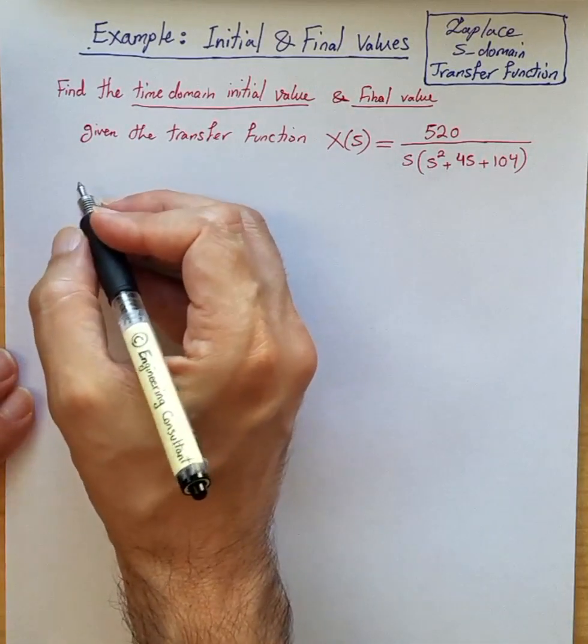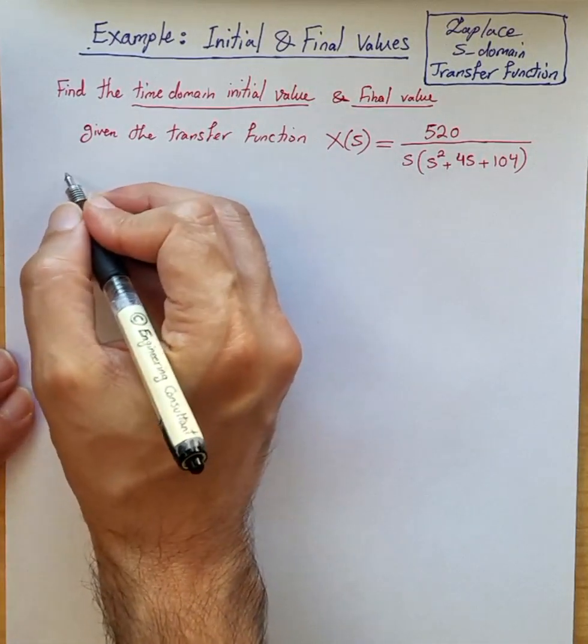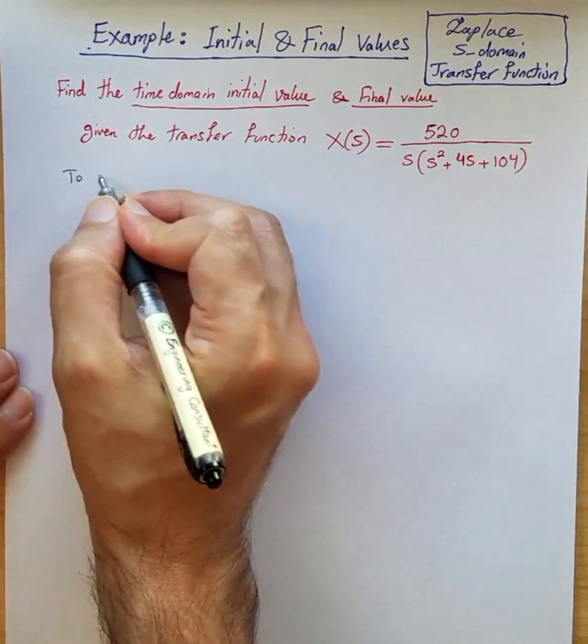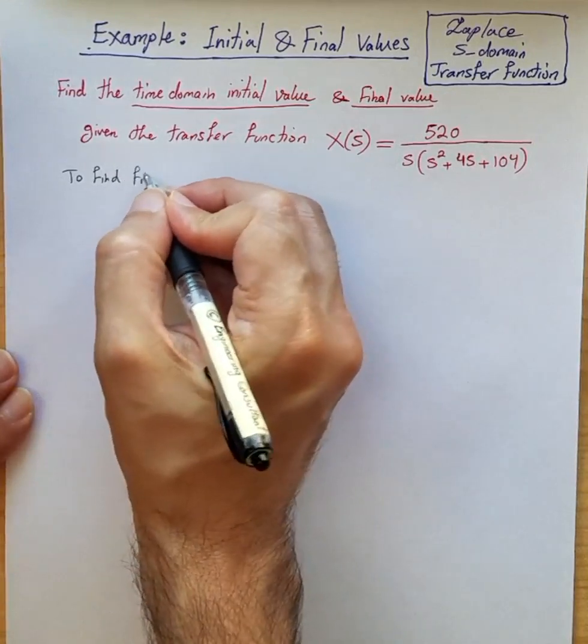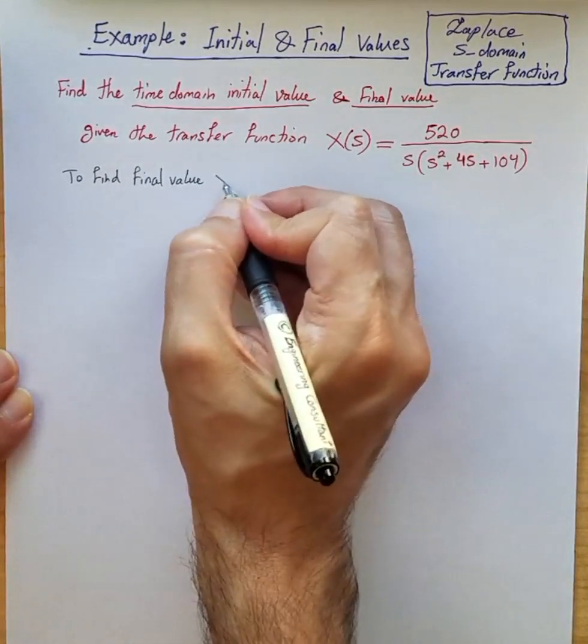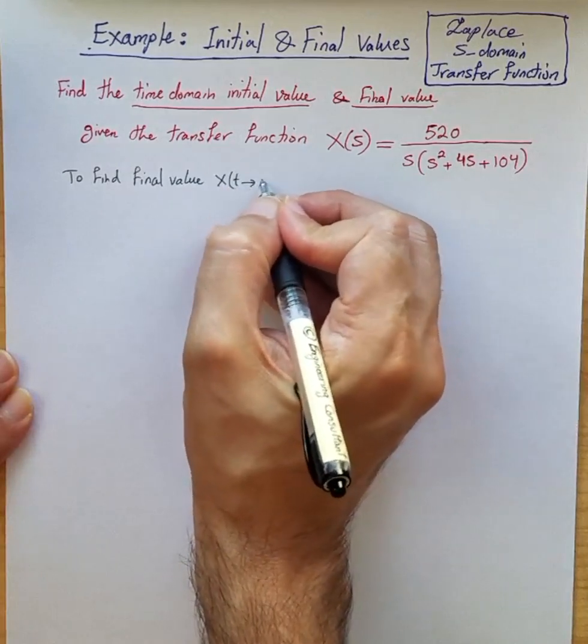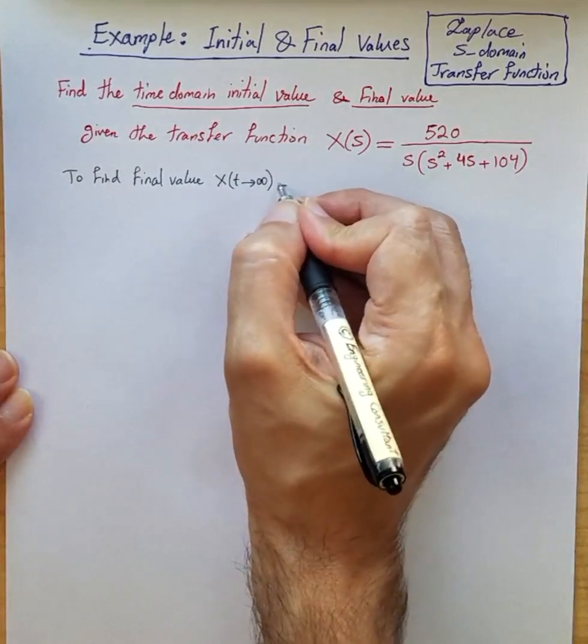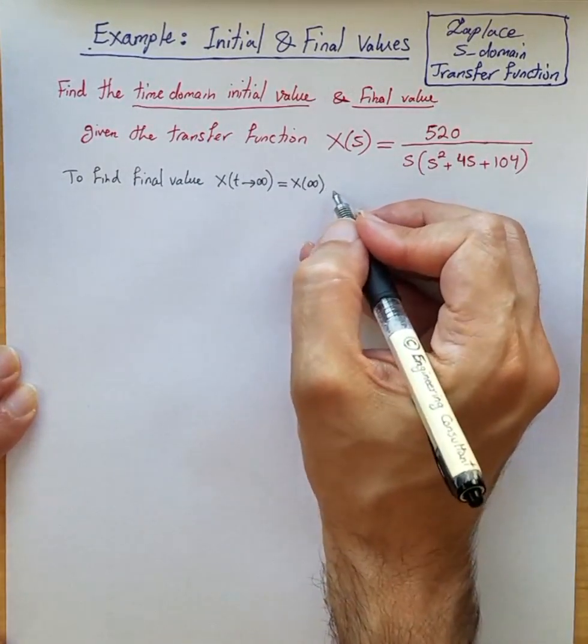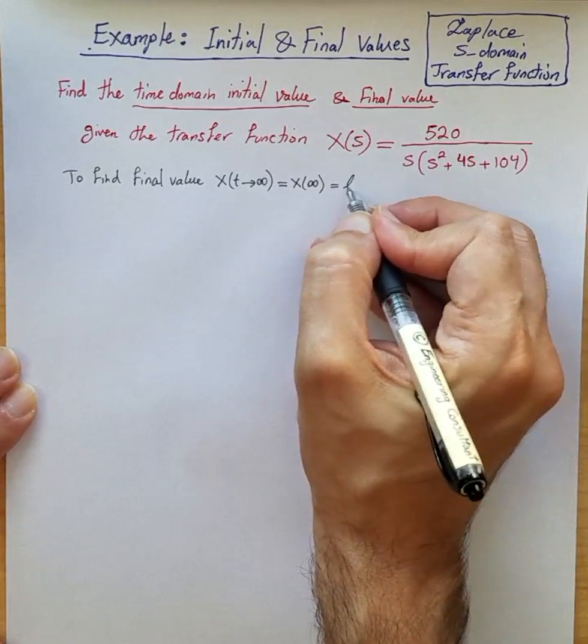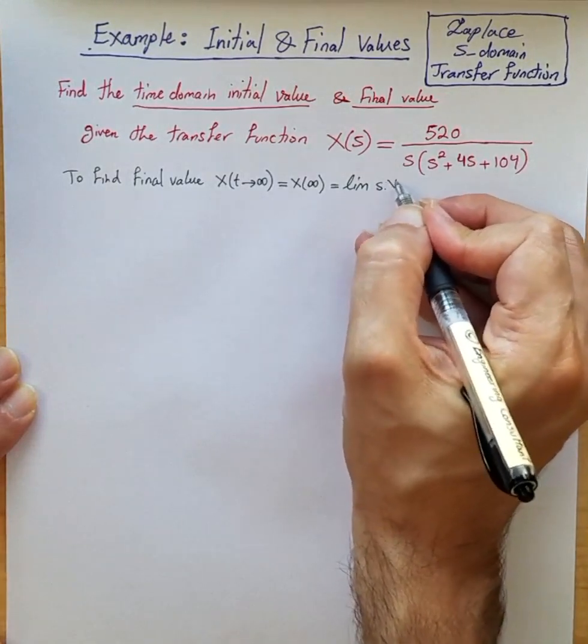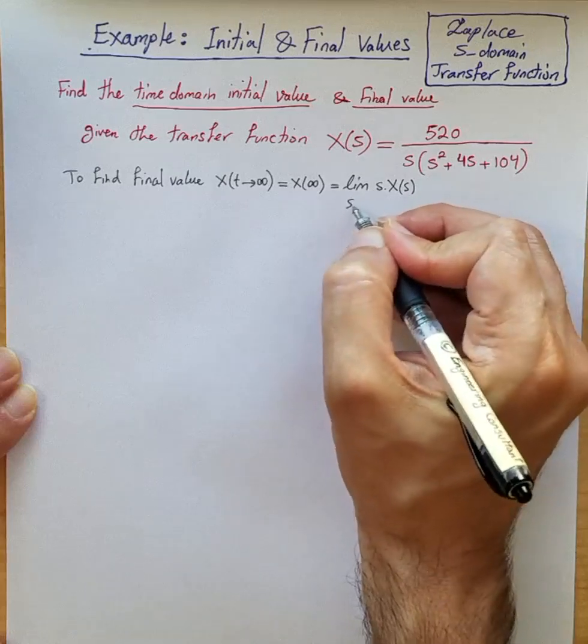So to find the final value, x(t) approaching infinity, which is abbreviated as x(∞) and denoted this way, we know the formula is just the limit of s·X(s) when s goes to 0.